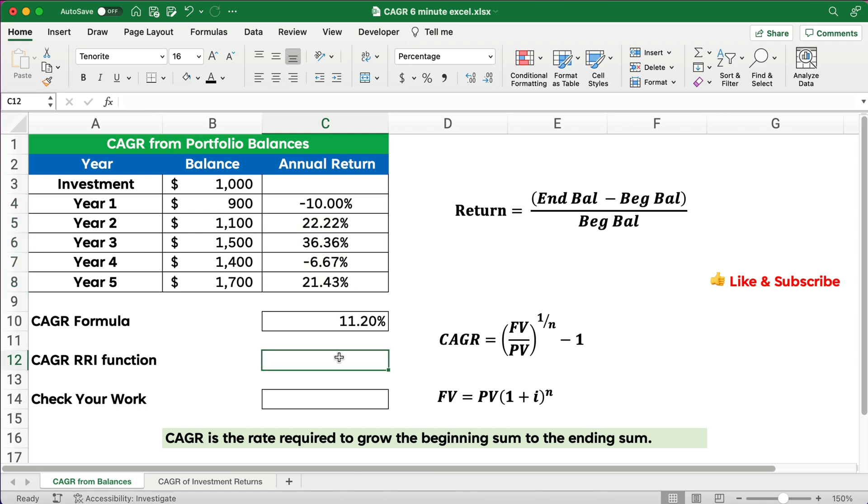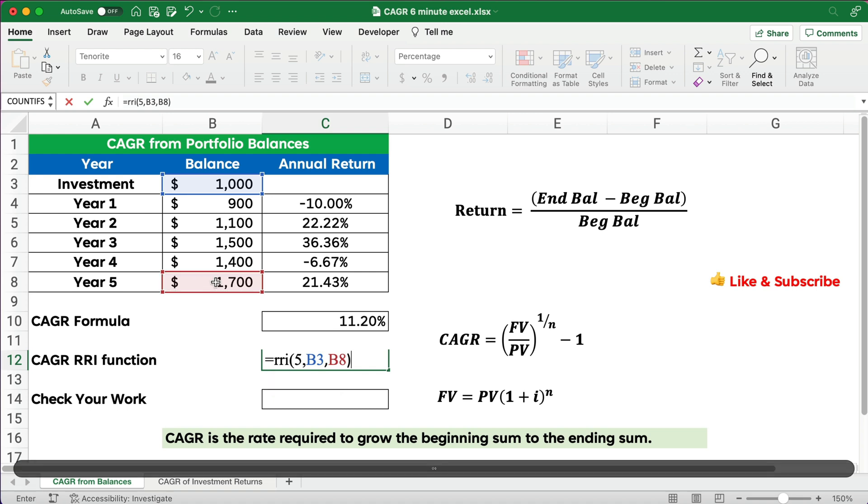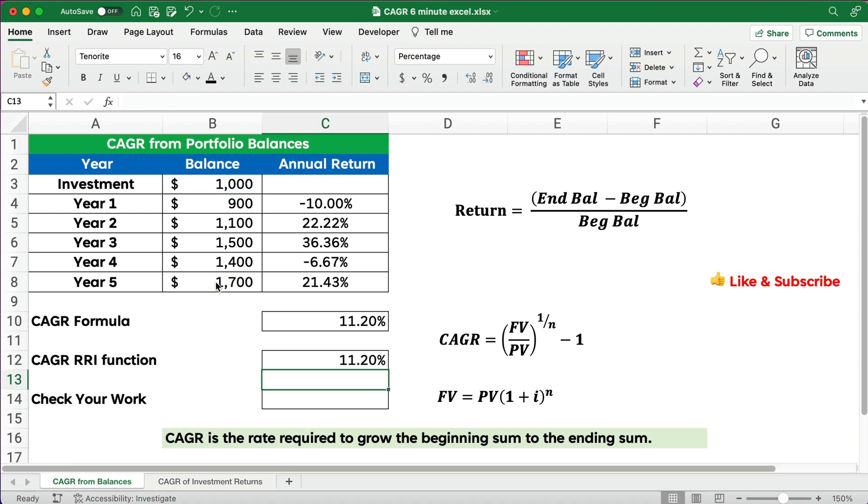Now a quicker way to do it is the RRI function. So we can just start with an equal sign, RRI, start with a parenthesis, and it says, hey, the number of periods, I'm going to type that in to be 5, and the present value is 1,000, and the future value is 1,700. We should get the same answer, so 11.2%.